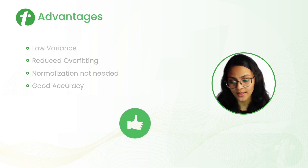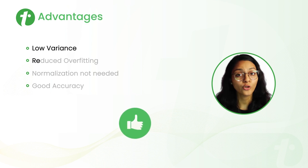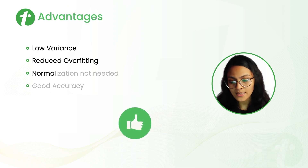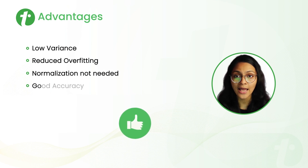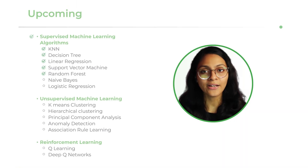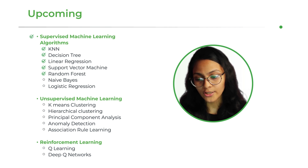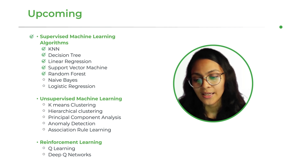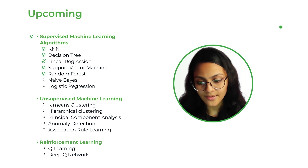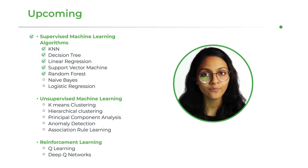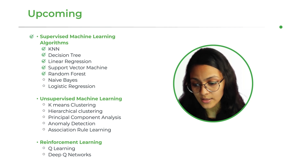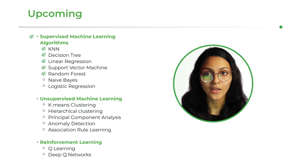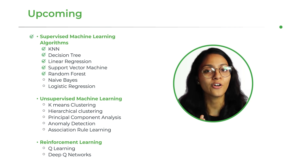What are the advantages of random forest? It has low variance, it reduces overfitting, normalization is not needed, and it has good accuracy. So that was it for this video. We have already discussed supervised machine learning algorithms: KNN, decision tree, linear regression, support vector machine, and random forest in this video. In the next video, we are going to discuss naive Bayes and the rest of the machine learning algorithms in further videos. Stay tuned with Tutorials Point. Thanks for watching and have a nice day.